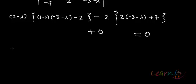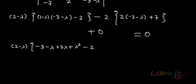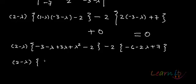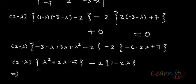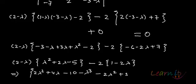This entire expression should equal 0. Expanding: (2 minus lambda) multiplied by (minus 3 minus lambda plus 3 lambda plus lambda squared minus 2), minus 2 times (minus 6 minus 2 lambda plus 7). This gives us (2 minus lambda)(lambda squared plus 2 lambda minus 5) minus 2(1 minus 2 lambda). Expanding further: 2 lambda squared plus 4 lambda minus 10 minus lambda cubed minus 2 lambda squared plus 5 lambda minus 2 minus 4 lambda.